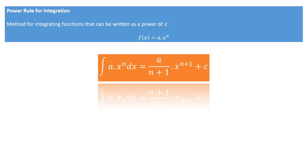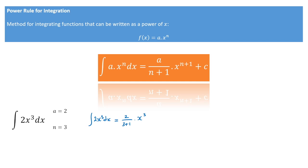Now let's look at a quick example. Let's say we have to integrate 2x cubed. Comparing this function to a times x to the power of n, we can see that a is equal to 2 and n is equal to 3. So using the power rule, we can write the integral of 2x to the power of 3 equals 2 over 3 plus 1, times x to the power of 3 plus 1, plus some constant c. This leads us to 2 over 4 times x to the power of 4 plus c, and finally, that leads us to one half times x to the power of 4 plus c.